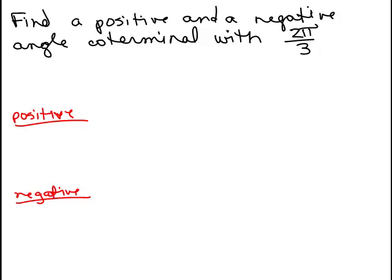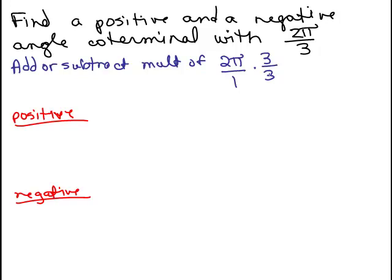So let's do this problem. Find a positive and a negative angle coterminal with 2π/3. So this means we're going to add or subtract multiples of 2π. And just keep in mind that 2π, if I'm going to add to this, it'd be convenient if I had a common denominator. I'm going to multiply that by 3 over 3. So adding or subtracting multiples of 2π is the same as adding multiples of 6π/3. That's the same thing.